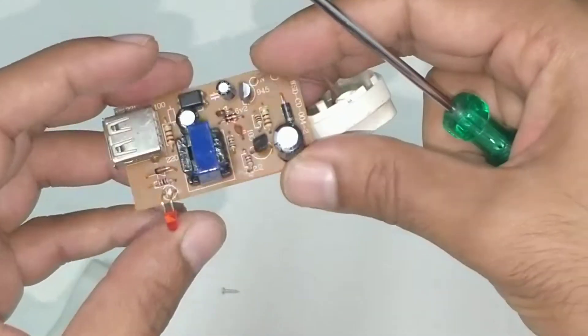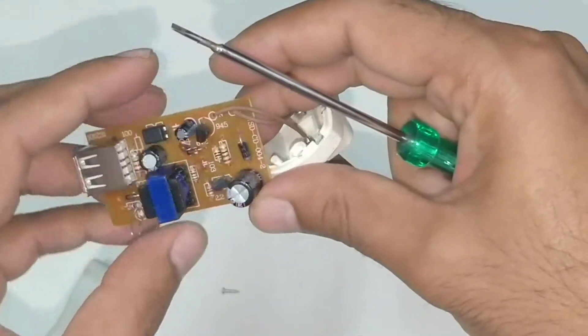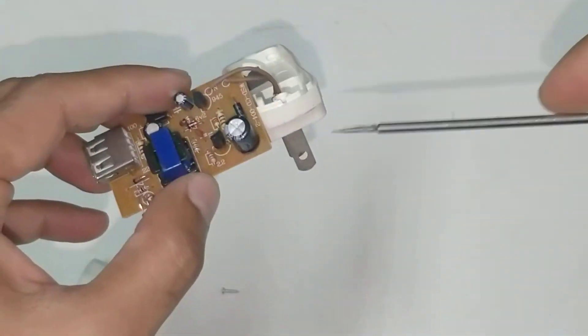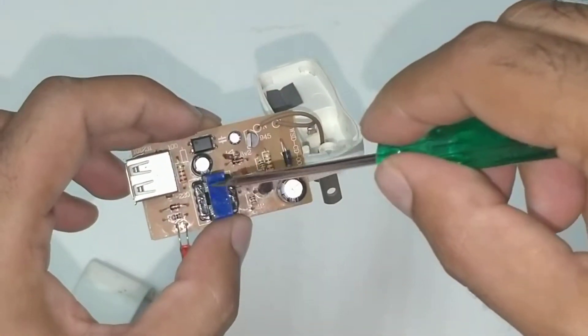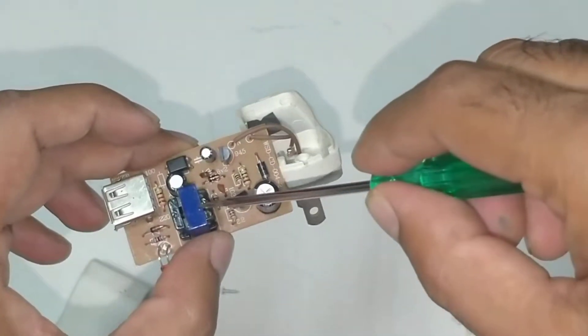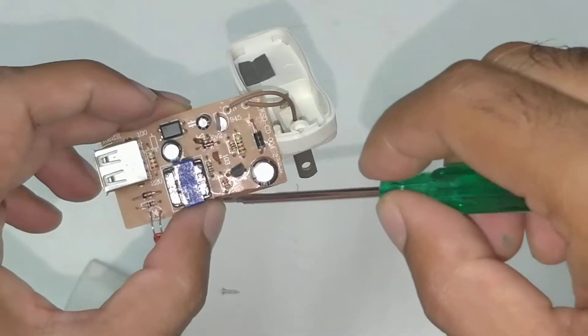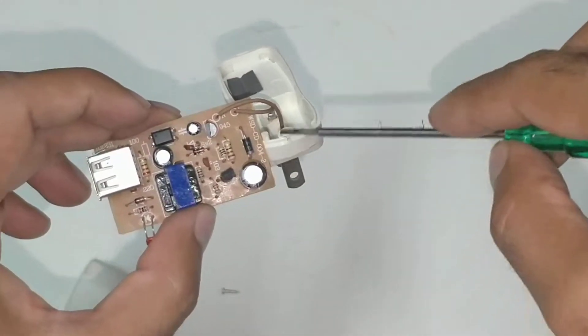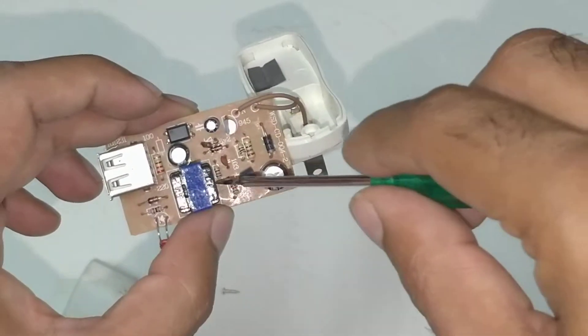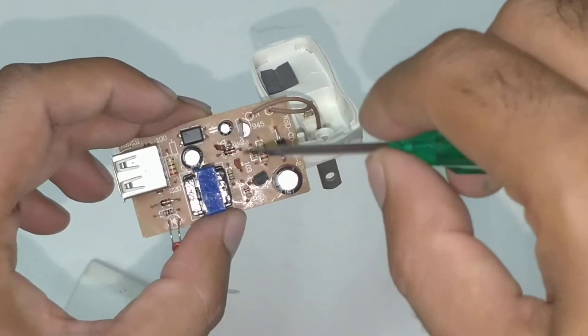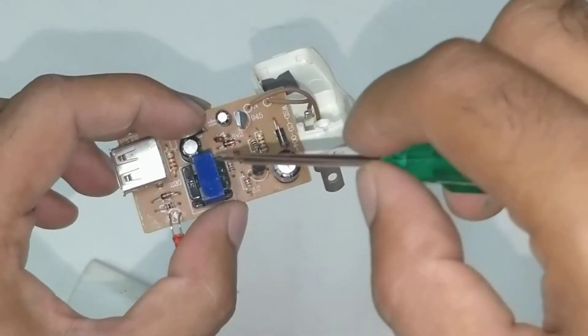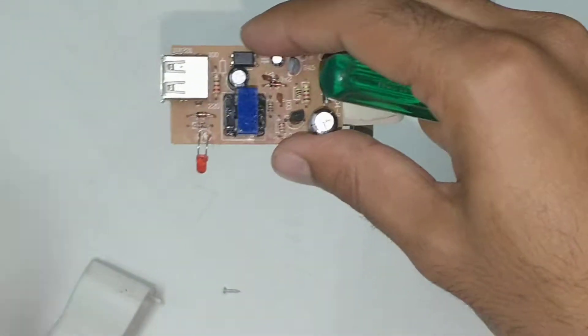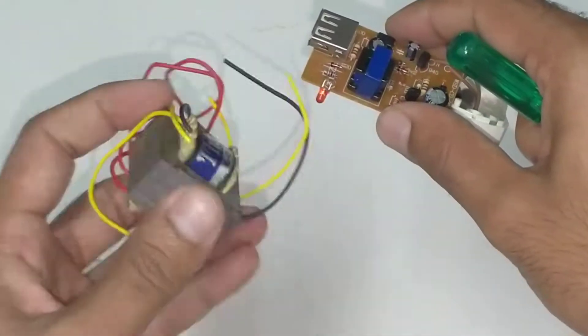So basically, how does it work? You have a transformer. For the transformer to work you need AC, alternating current. This circuit takes input from your house, converts it into DC, then with this switching circuit it switches into AC. Because it switches at high frequency, you can reduce the transformer size. This is switching at 50 Hertz, which is your house frequency, the domestic frequency.